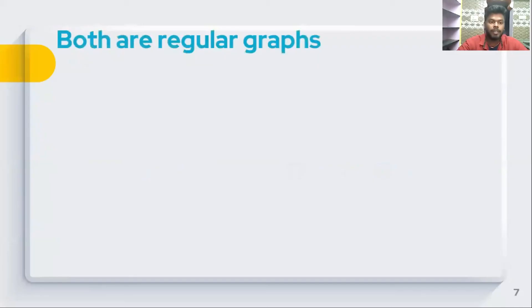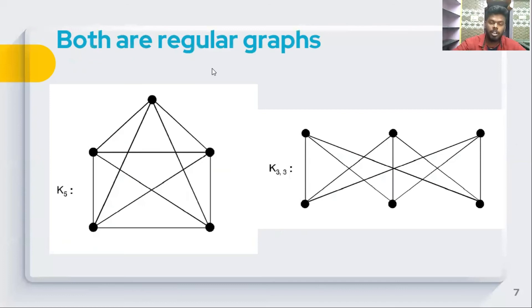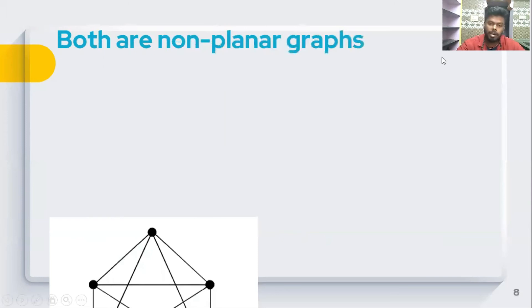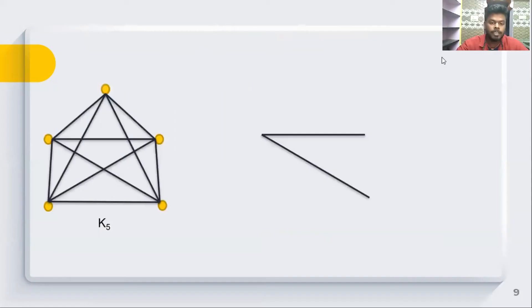Let's check the first observation. Looking at the two graphs, we verify that both have regular degree — degree 4 for K5 and degree 3 for K3,3. The observation is the same for both: any intersection confirms non-planarity. If we delete a graph edge, we can see how that affects planarity.